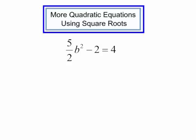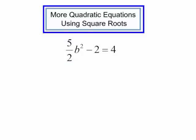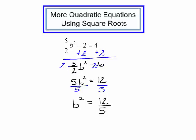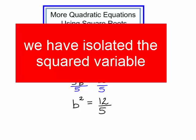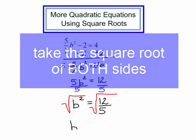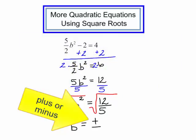Let's try one more problem: 5 halves of b squared minus 2 equals 4. I only have the squared variable — I do not have a variable to the first power, so I will use the square root property. Let's isolate b squared: I will add 2 to both sides. Now b squared is multiplied by 5 halves — I will multiply both sides by 2 and then divide by 5. I now have b squared equals 12 fifths. I have isolated b squared. I will take the square root of both sides. The square root of b squared is just b. Don't forget, when you take the square root of both sides, be sure to put your plus or minus.